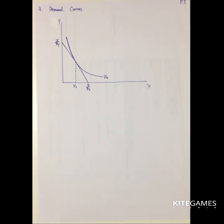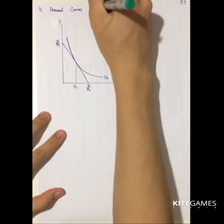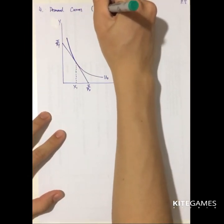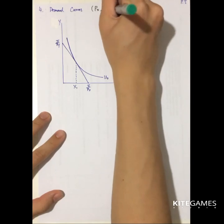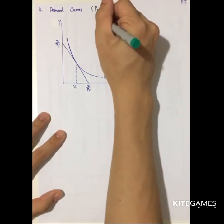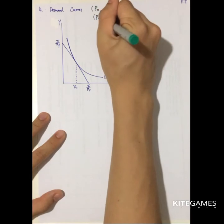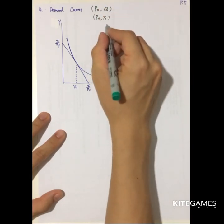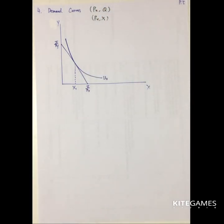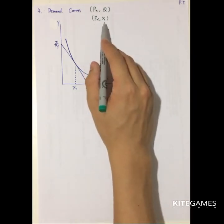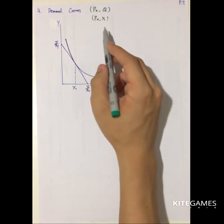Next would be the concept of demand curves. A demand curve is a relation between the price of a certain kind of good and its quantity. So if we are looking at the price of good X, we are referring to the price of good X and the quantity of good X. The demand function is the relation between price and the optimal quantity of X.